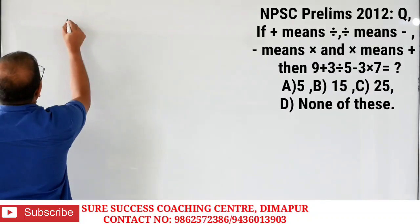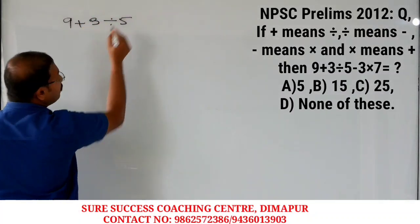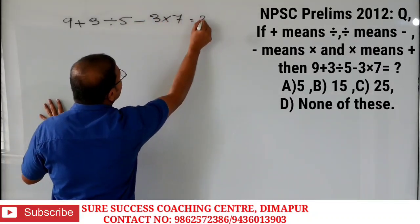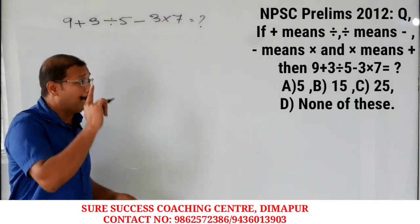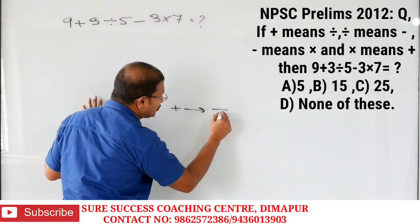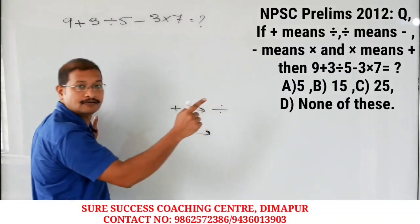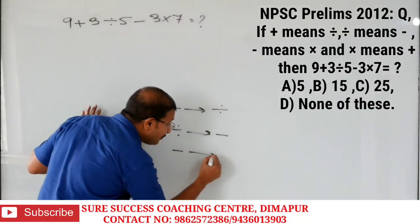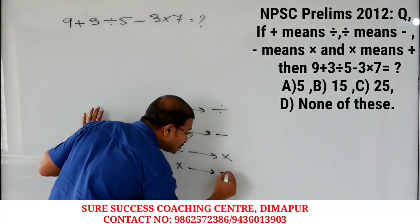See what is given: 9 plus 3 divided by 5, divided by 5 minus 3 into 7 equals question mark. What is given actually? Plus means division, that means plus means division. After that, division means subtraction, and again subtraction means multiplication, and multiplication means addition.